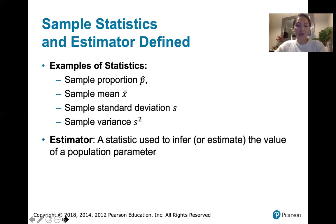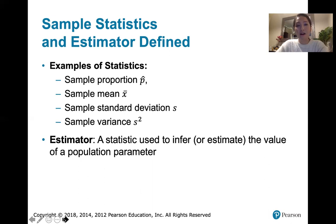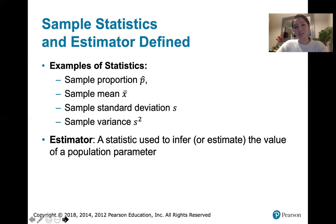Each of these can be thought of as estimators — statistics used to infer or estimate the value of a population parameter. We're usually not looking for p-hat itself; what we're really interested in is the population proportion p. Similarly, we may not be interested in the sample mean X-bar, but rather the population mean mu. The same is true for sample standard deviation and variance — each statistic estimates the corresponding population parameter.